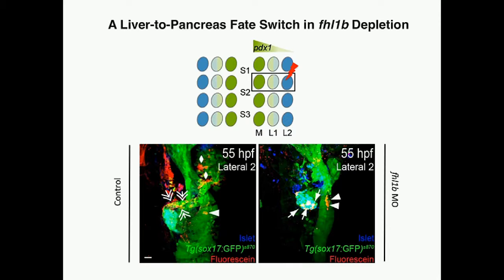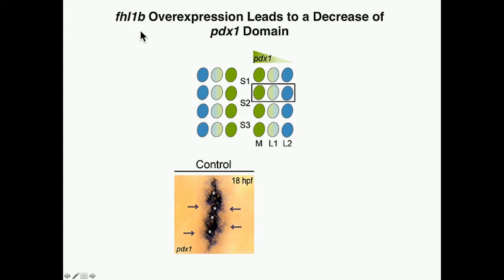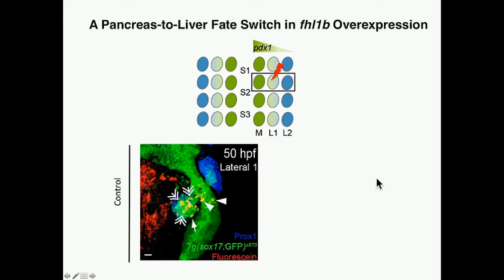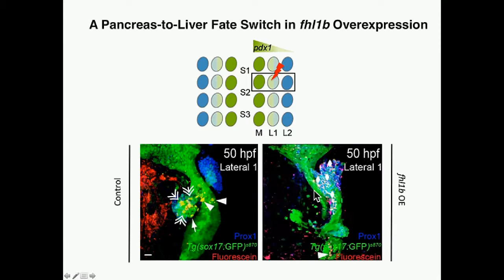For the opposite case, when we overexpressed FHL1B, there was a decrease in the PDX1 expression domain, especially the low-level PDX1 expression domain. When we traced the fate of L1 cells — which generally give rise to pancreatic cells — after FHL1B overexpression around 6 to 8 somite stage, the majority of L1 cells instead gave rise to liver cells. So we demonstrated a fate switch based upon FHL1B expression level in both directions.